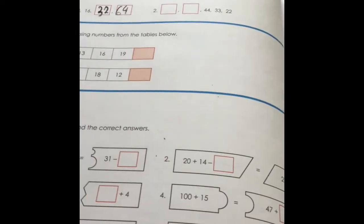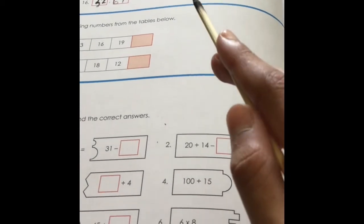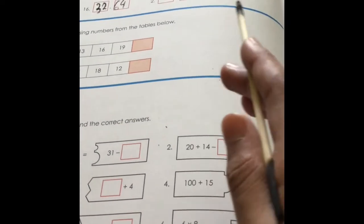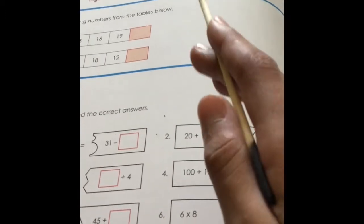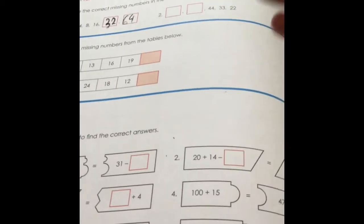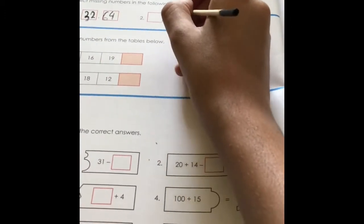Number 2: 22, 33, 44. Let's try it this way: 22, 33, 44, 55, 66.